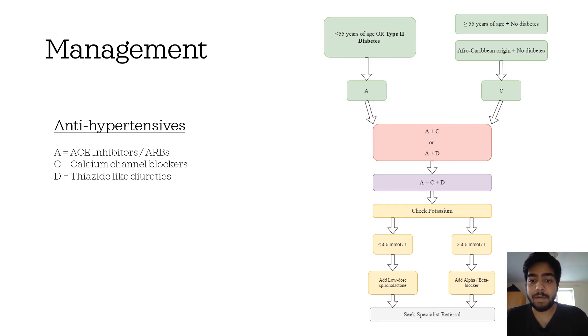If this treatment doesn't work, you'll have to go for the fourth-line treatment. Before starting the fourth-line treatment, you have to check potassium. If the potassium is less than or equal to 4.5 millimoles per liter, then you'll add low-dose spironolactone. If it is more than 4.5 millimoles per liter, then you'll add alpha or beta blocker. This is the fourth-line treatment. If this treatment doesn't work, then you'll have to go for a specialist referral.